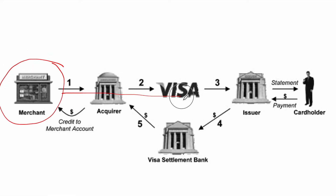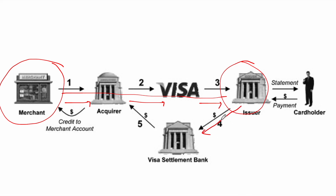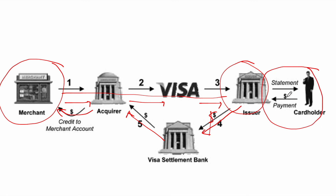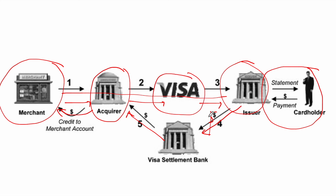Looking at the full flow one more time: at the merchant, the customer makes a purchase, which is authorized by the issuer. Then the clearing process happens where parties agree on what funds have to be transferred. Finally, the transfer of funds flows from the issuer to the settlement bank, to the acquirer, and from the acquirer it is credited to the merchant's account. The merchant receives the money during the settlement process, and the money is debited from the cardholder's account. For details on charges levied by the acquirer or IPS, see the linked video.